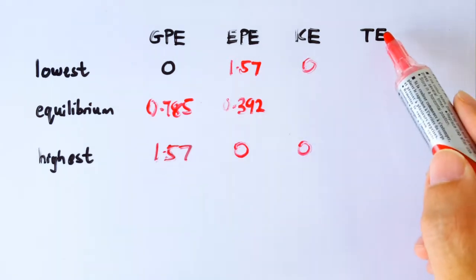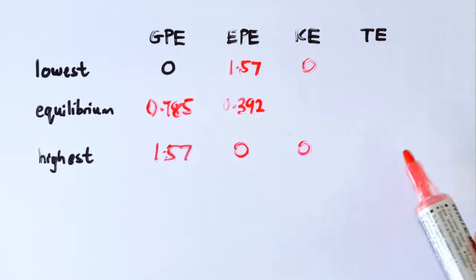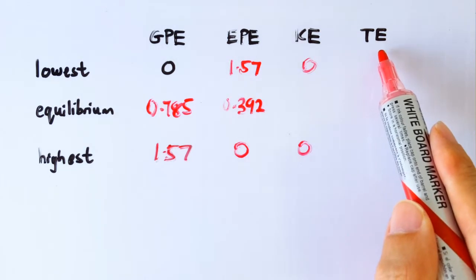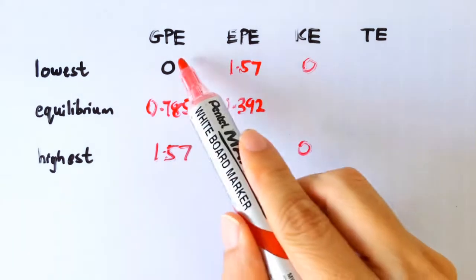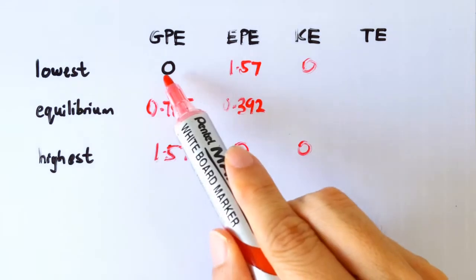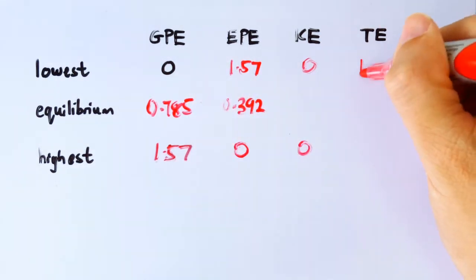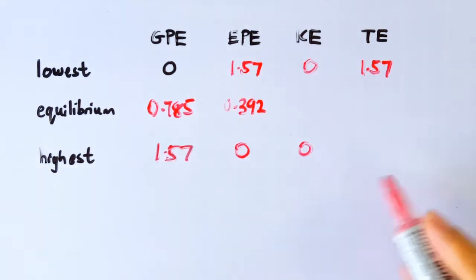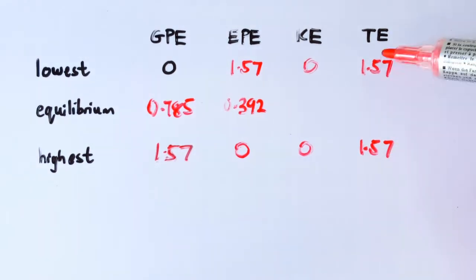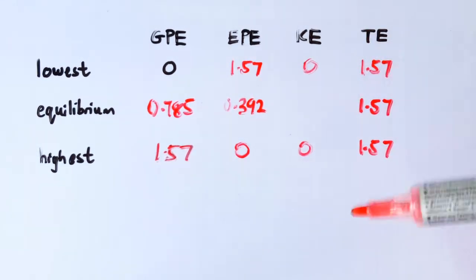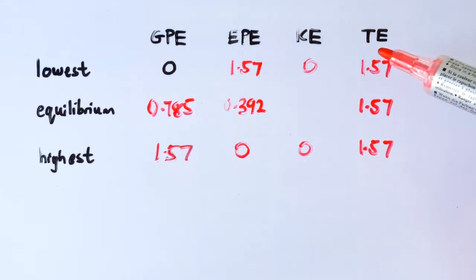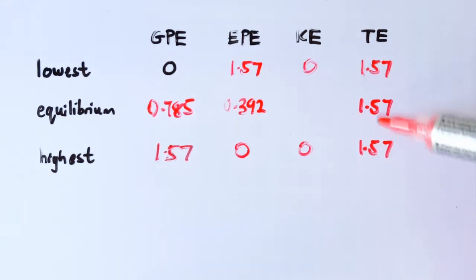But we can fill in this column now. The total energy of the spring mass system is basically the summation of GPE, EPE, and KE. So you just add up these three numbers, you will get the total energy. Of course, the total energy of the spring mass system should be constant. It is just oscillating, and if there is no damping, then the total energy remains as this.